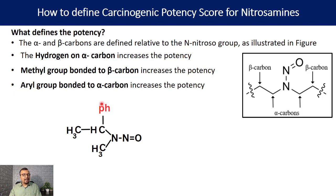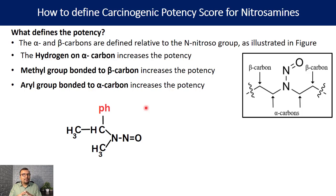Similarly, an aryl group bonded to the alpha carbon increases the potency of the nitrosamine compound. The aryl group can be a benzene ring, and if this benzene ring is present on the alpha carbon, the potency of the nitrosamine is enhanced compared to the absence of that aryl group.